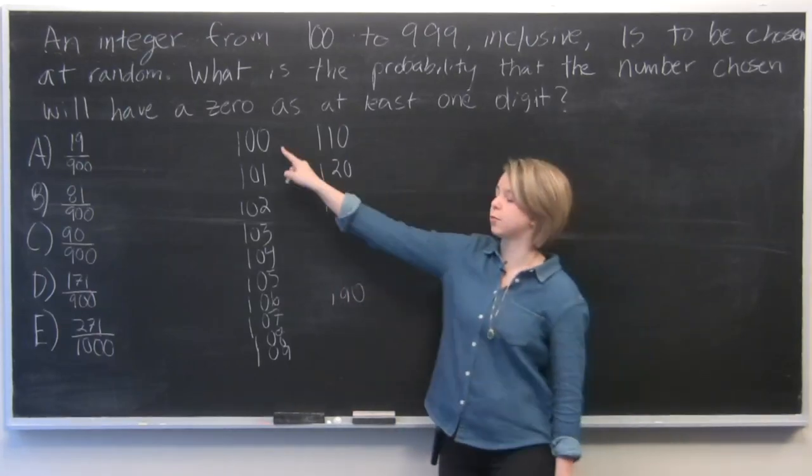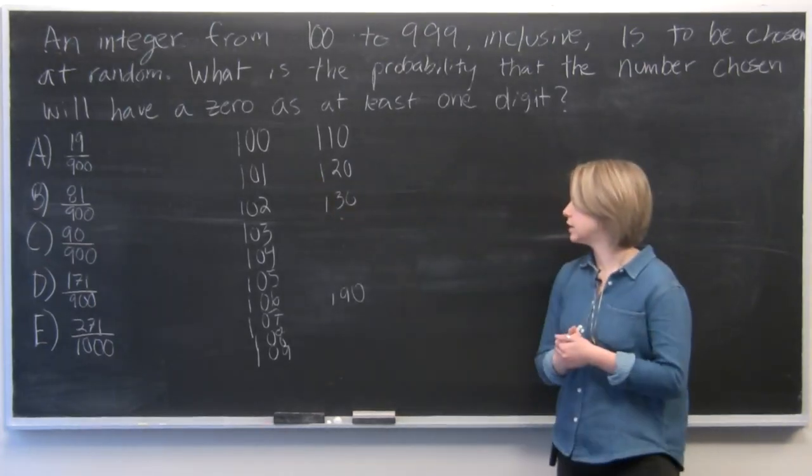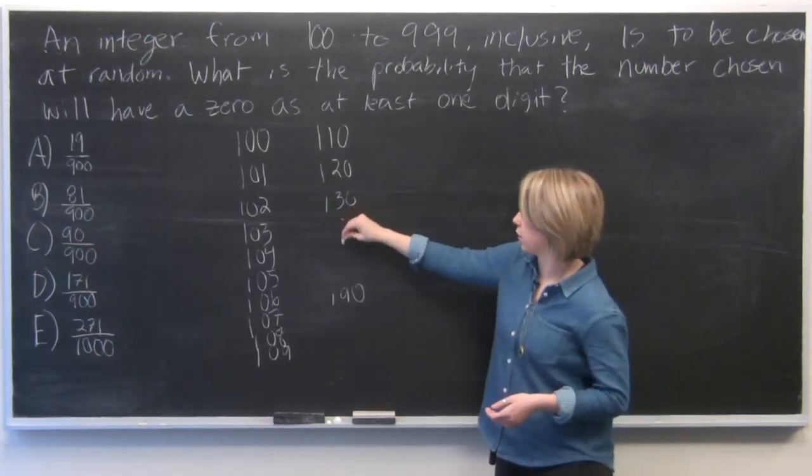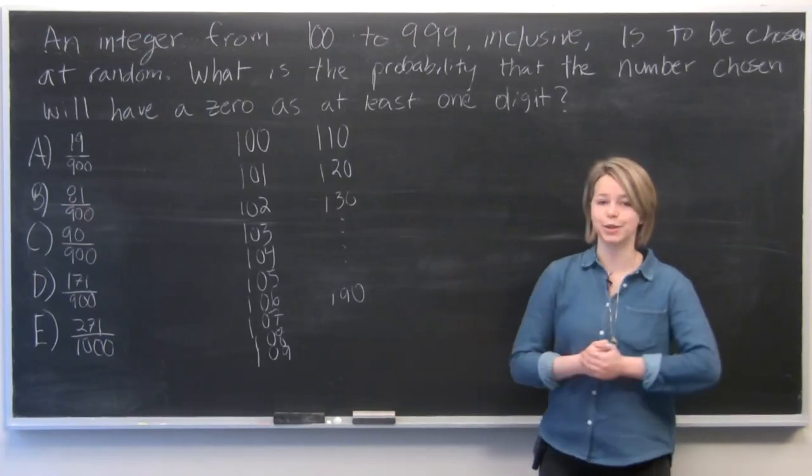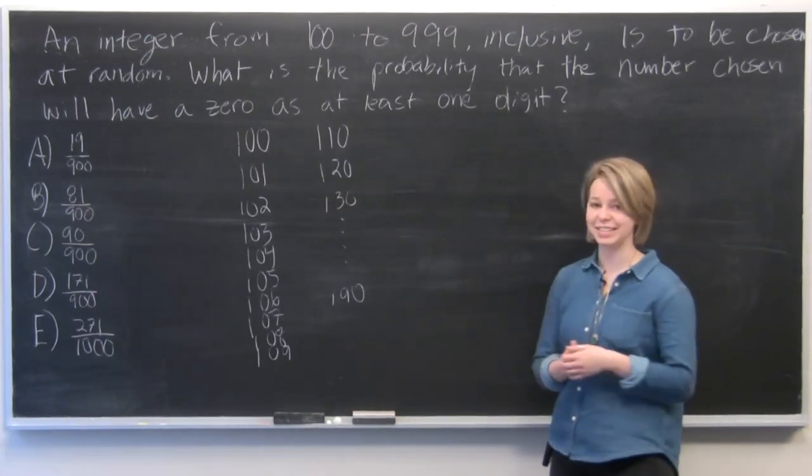And then the list would begin again with 200. So in order to make this a lot quicker, we definitely don't want to be making a list of all of these numbers and adding them up during the ACT test.